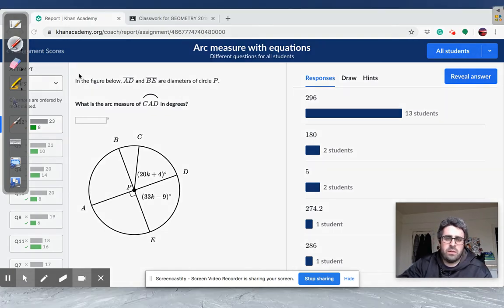All right, so it says in the figure below, AD and BE are diameters of circle P. So that's important to understand because if these are diameters, then we can say that this piece over here is 180 degrees and so is this piece over here. So I'm going to highlight this one here. That's going to help us solve the problem.